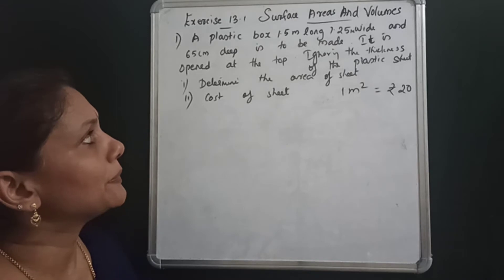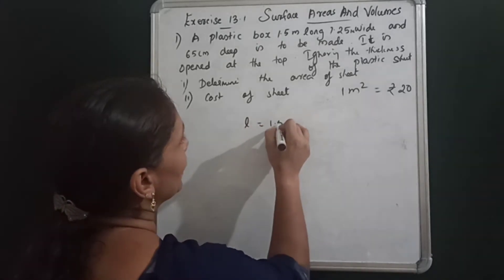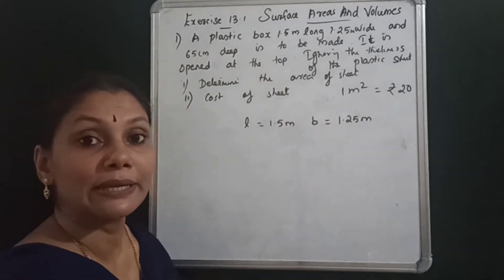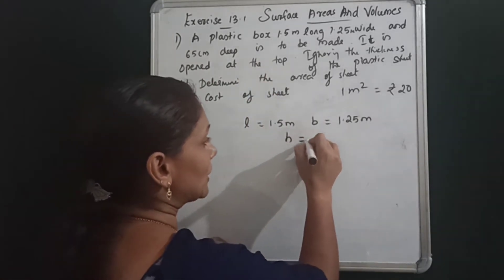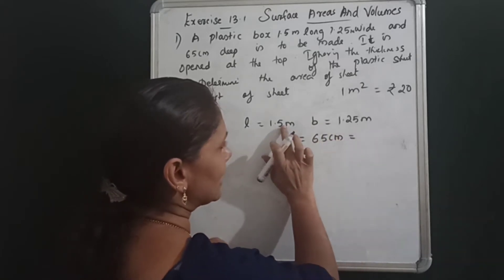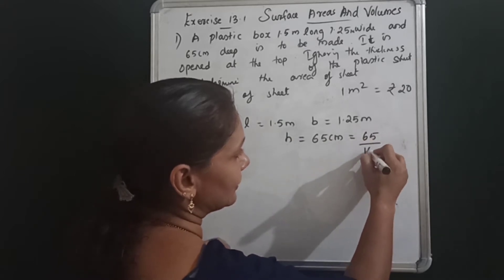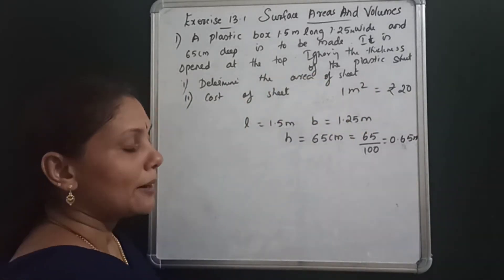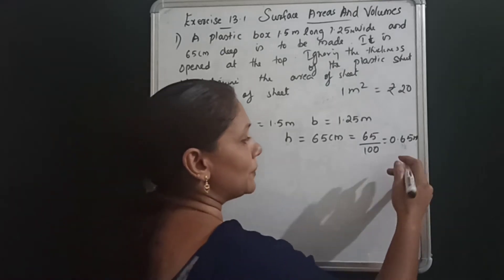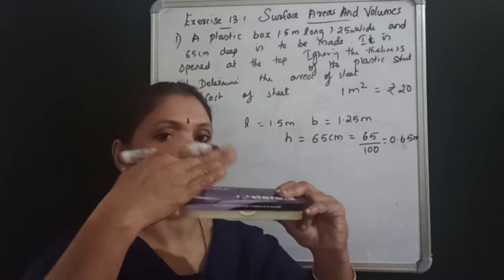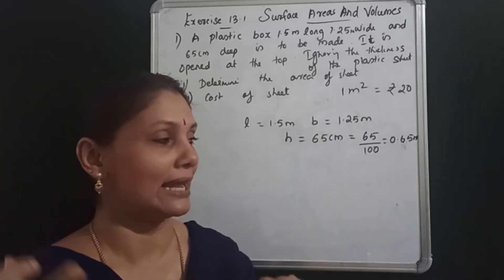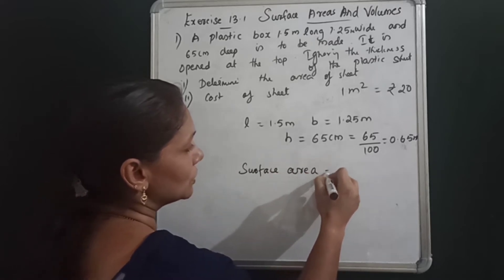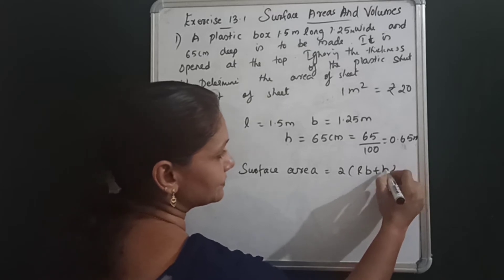The first question: a plastic box is 1.5 metres long, so L = 1.5 m; it is 1.25 metres wide, so B = 1.25 m; and it is 65 centimetres deep, which is 65 ÷ 100 = 0.65 metres, so H = 0.65 m. The top of the box is open. We need to find the surface area using the formula: surface area = 2(LB + BH + HL).